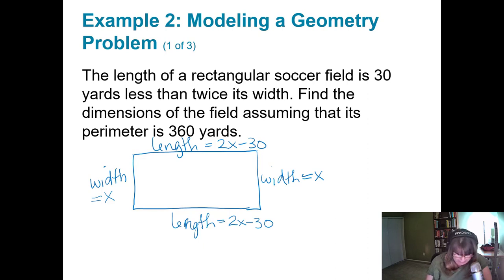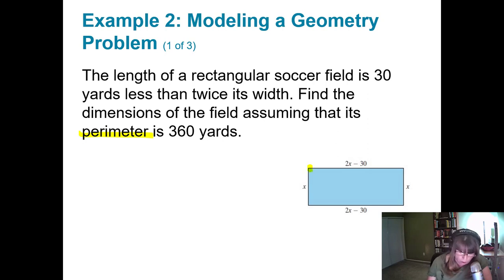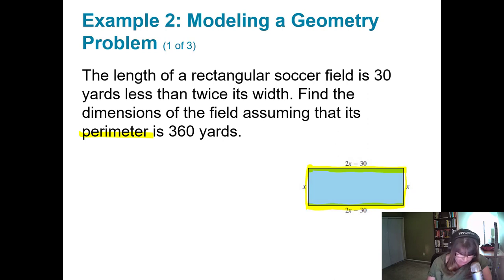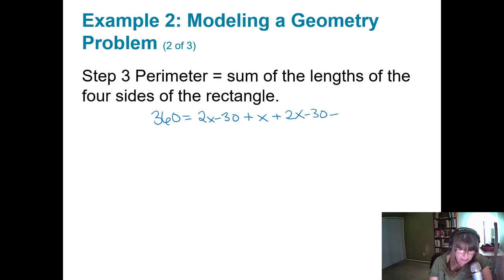Let me show this with a nice picture. The perimeter is 360 yards — meaning if I started at a corner and walked along the length, down the width, over the length, and up the width, that is the perimeter. Adding all the sides together gives the value of the perimeter, which is 360. The equation is: 360 equals 2x minus 30 plus x plus 2x minus 30 plus x.